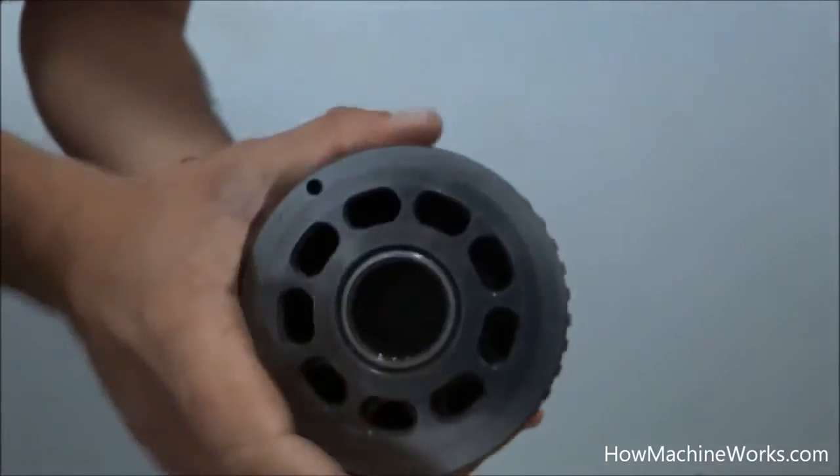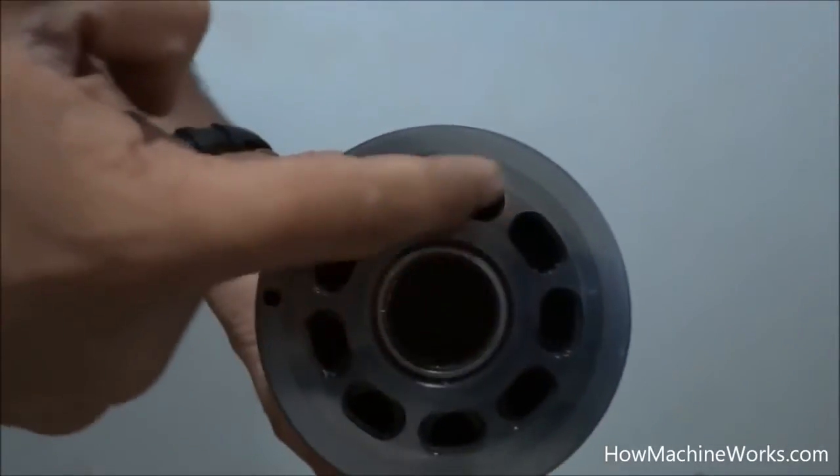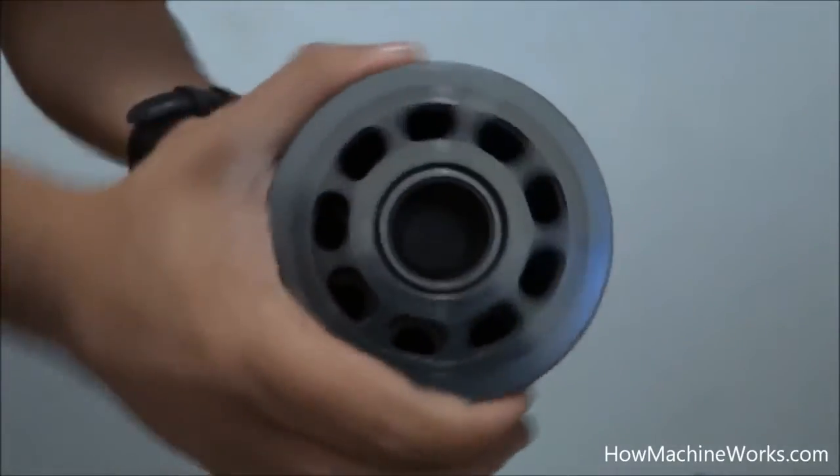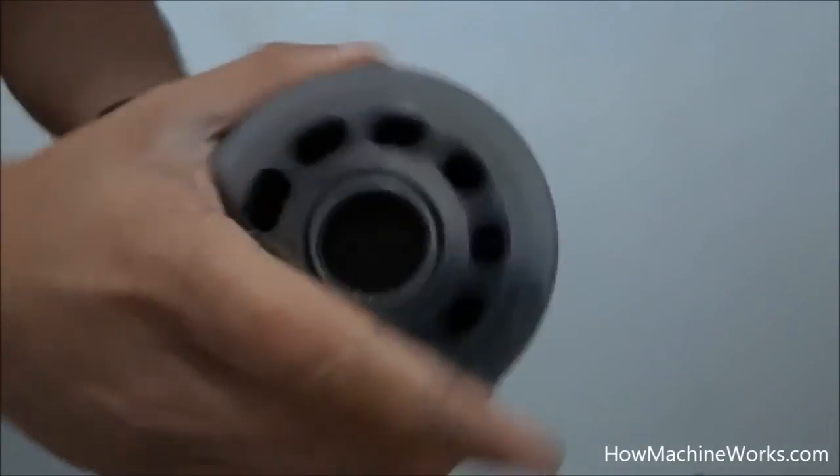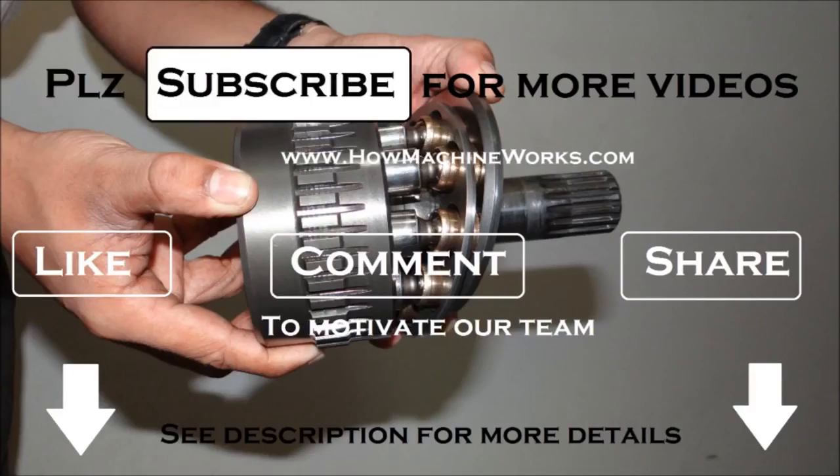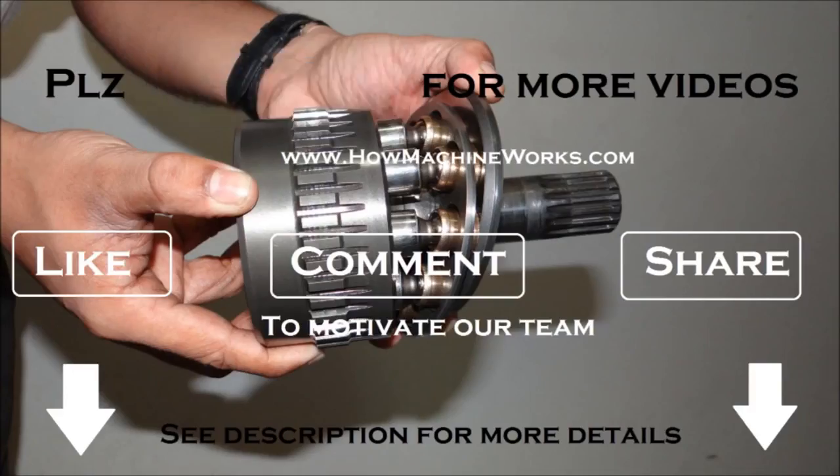The change in swash plate directly affects the flow. When increasing the angle, flow increases, and decreasing the angle, flow decreases. Because when the swash plate is vertical there is no piston movement, that is no axial movement of the piston, and no flow is happening. So as I requested, please subscribe,